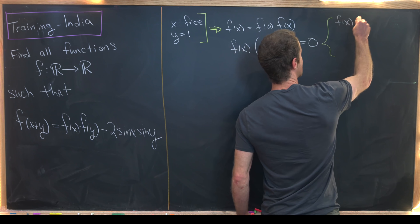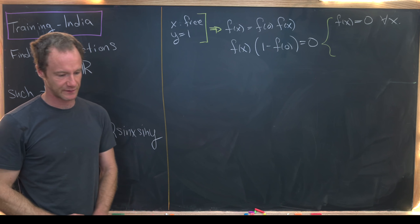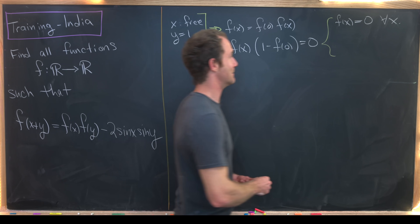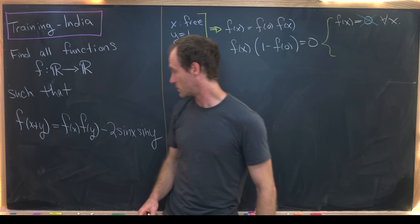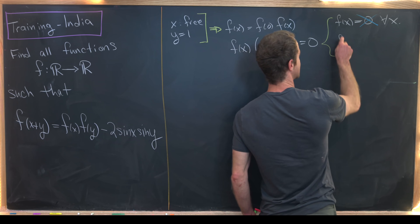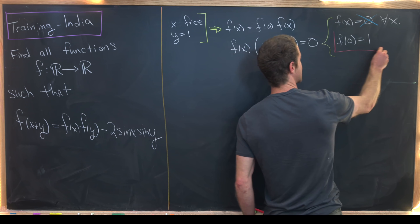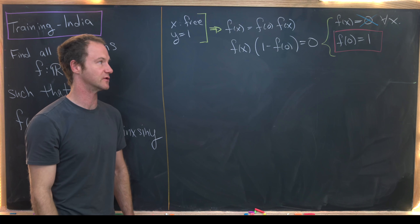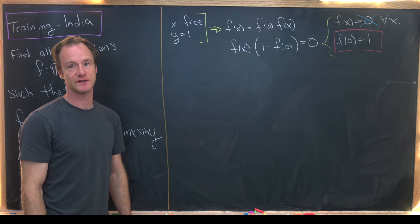The first possibility is that f(x) = 0 for all real numbers x — the constant zero function. But that does not actually satisfy this functional equation, so we can't use that. Our other possibility is that f(0) = 1, and this possibility actually works. So we know that f evaluated at zero is equal to one.